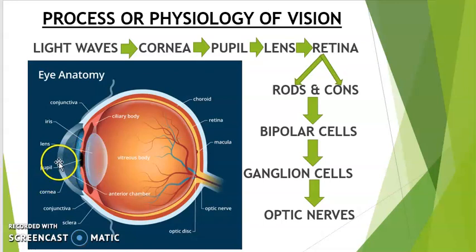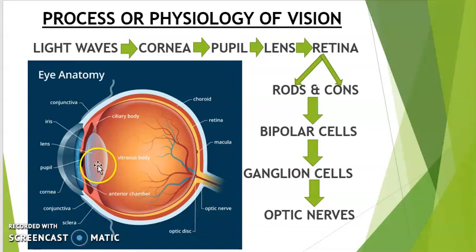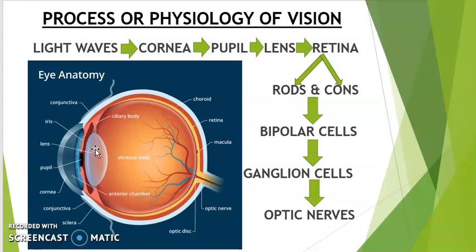The outer coat of the eye is called the cornea at the anterior side and sclera at the posterior side. The cornea is transparent — it allows light to pass through it — whereas the sclera is opaque and will not allow light to pass through. The cornea helps to protect the inner parts of the eye from accidents and also prevents dust or foreign bodies from entering inside. The cornea also helps to refract the light.